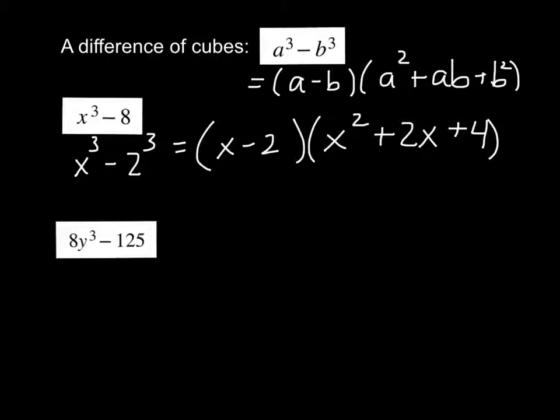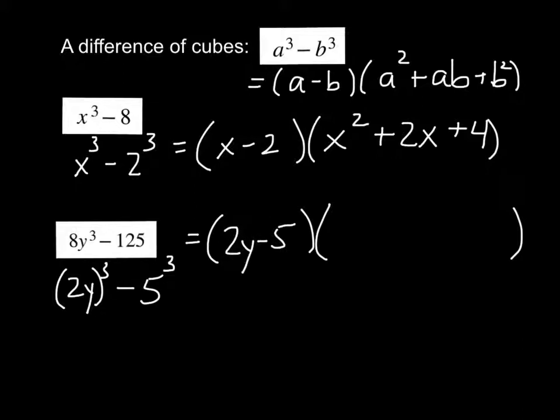And that should be it for that difference of cubes. Let's do one more. 2y to the quantity cubed will give us 8y³, and 5³ will give us 125. So take a minute and try that one. I'm going to jump right in: 2y - 5 in the first parentheses, and then this is going to be (2y)², which is 4y², plus because it's a difference, 2y times 5 so 10y, plus 5 times 5, which is 25.